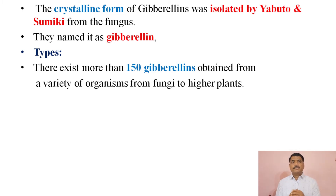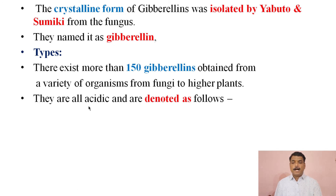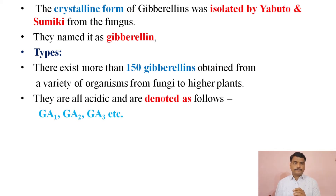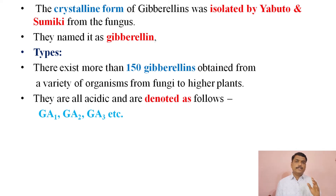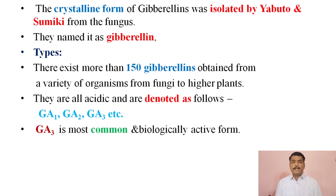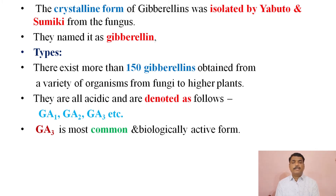They are all acidic and are denoted as GA1, GA2, GA3, and so on. They are also named gibberellic acid, abbreviated as GA. The biologically most active gibberellic acid is GA3, that is gibberellic acid 3, which is common in the majority of organisms and shows more effect than other gibberellic acids.